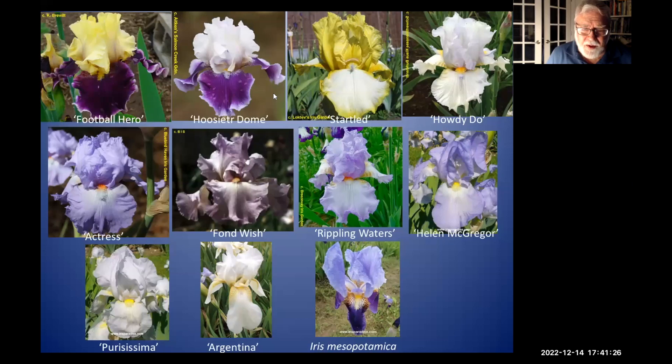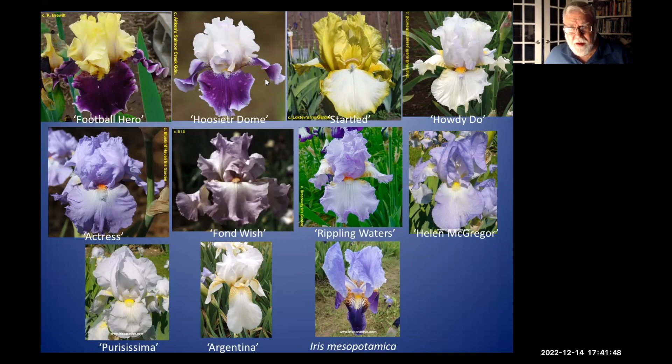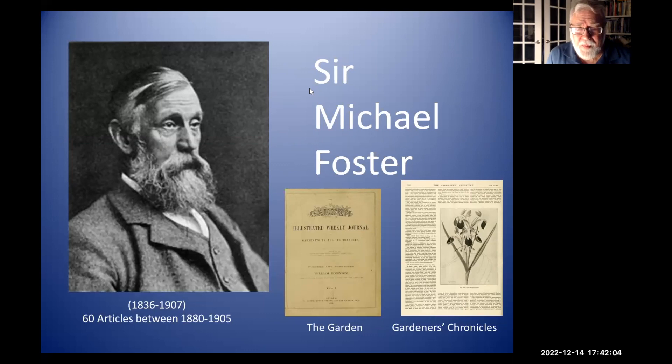Iris Mesopotamica is a tetraploid tall bearded, and you can see within easily two or three generations something very different was developing by crossing the species with what was out there. Going back through history, all of the different classes we have in the Iris Society all started with species crosses. We didn't call them species crosses at the time, but nonetheless they were species crosses.